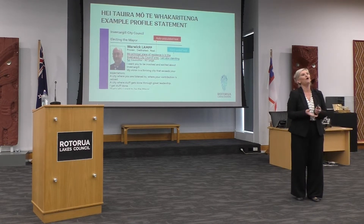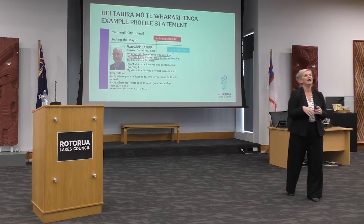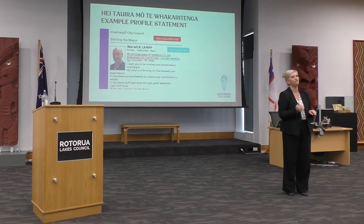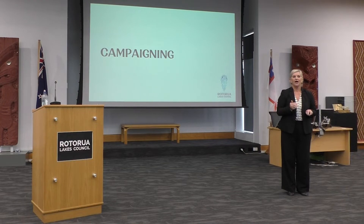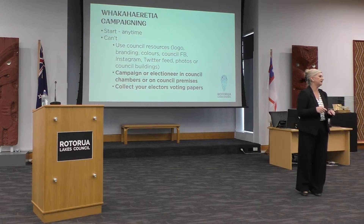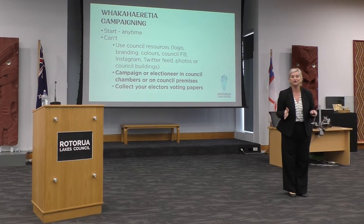Here's an example of what the candidate handbook would look like, picking up on elements we've discussed — where you reside, wards or positions you are standing for, your photo, and the beginning of your profile. Moving into campaigning: your nomination is in and you're going to start your campaign — well, actually campaigning has already started. You may have already seen a lot of collateral out there from people who may not even have their nominations in yet. Campaigning can start any time.